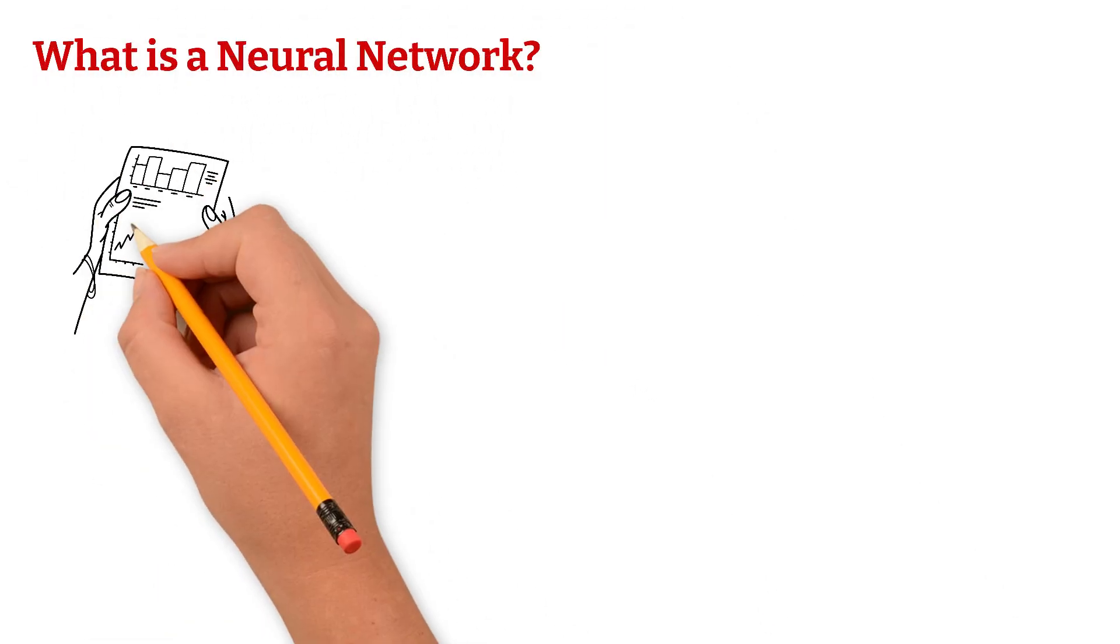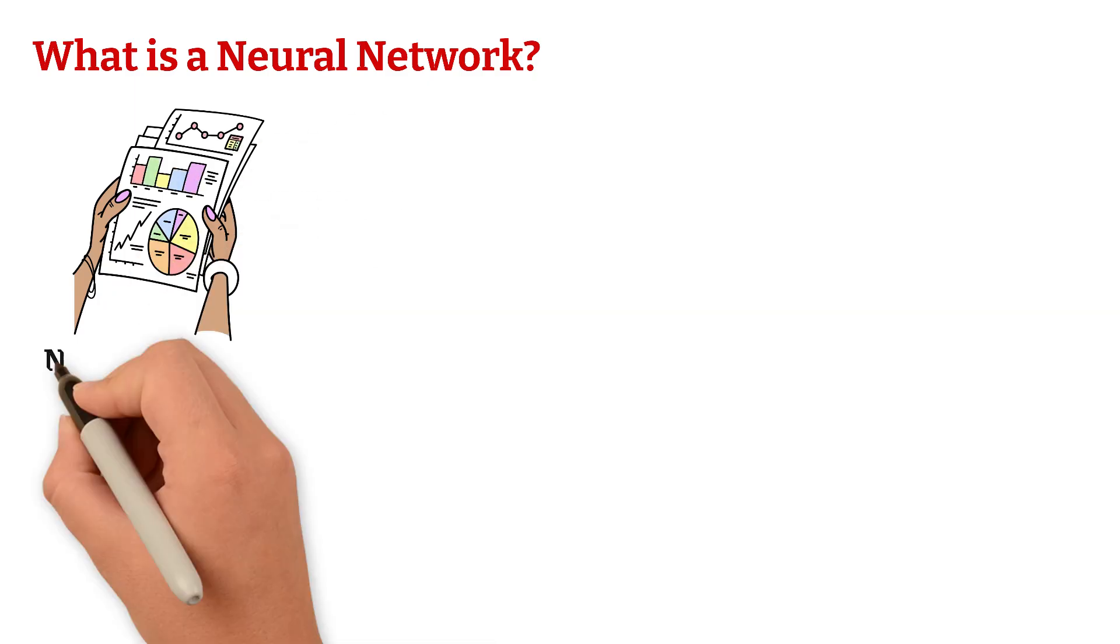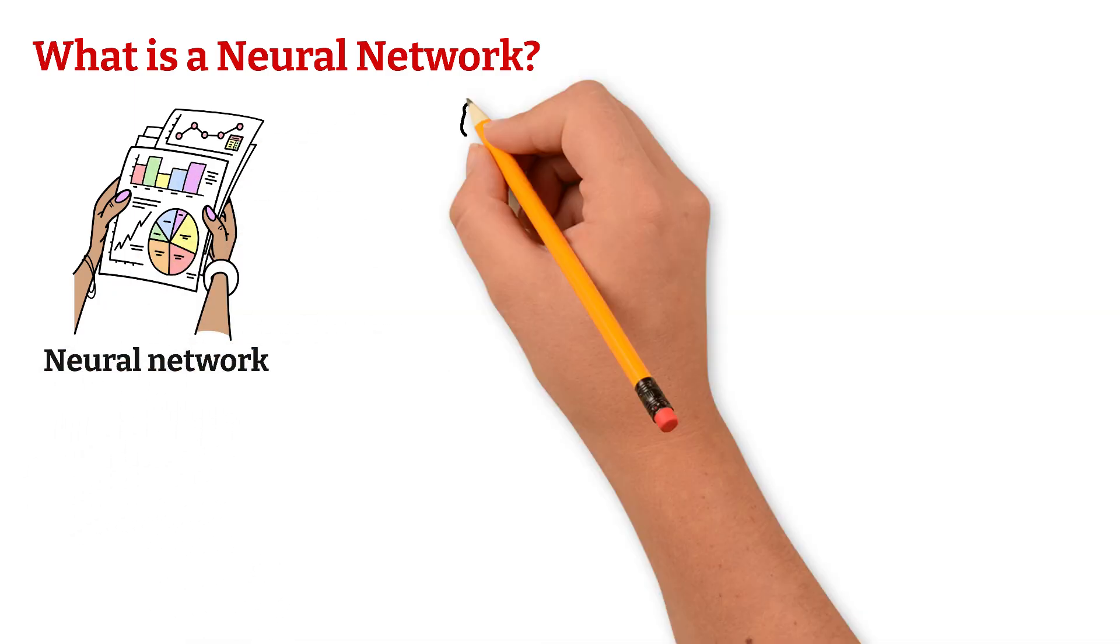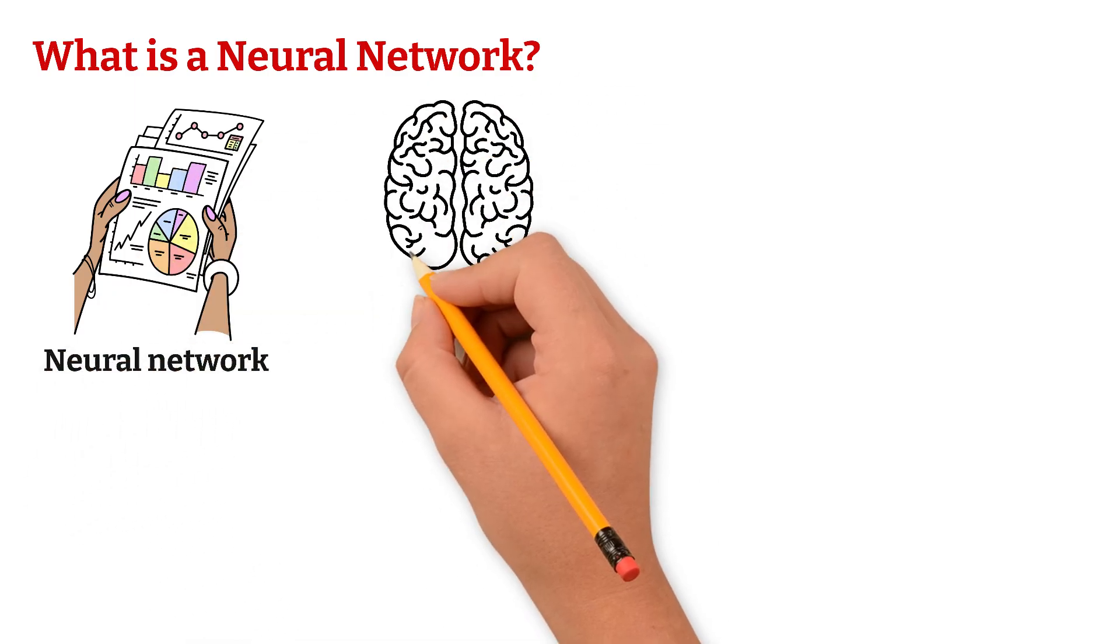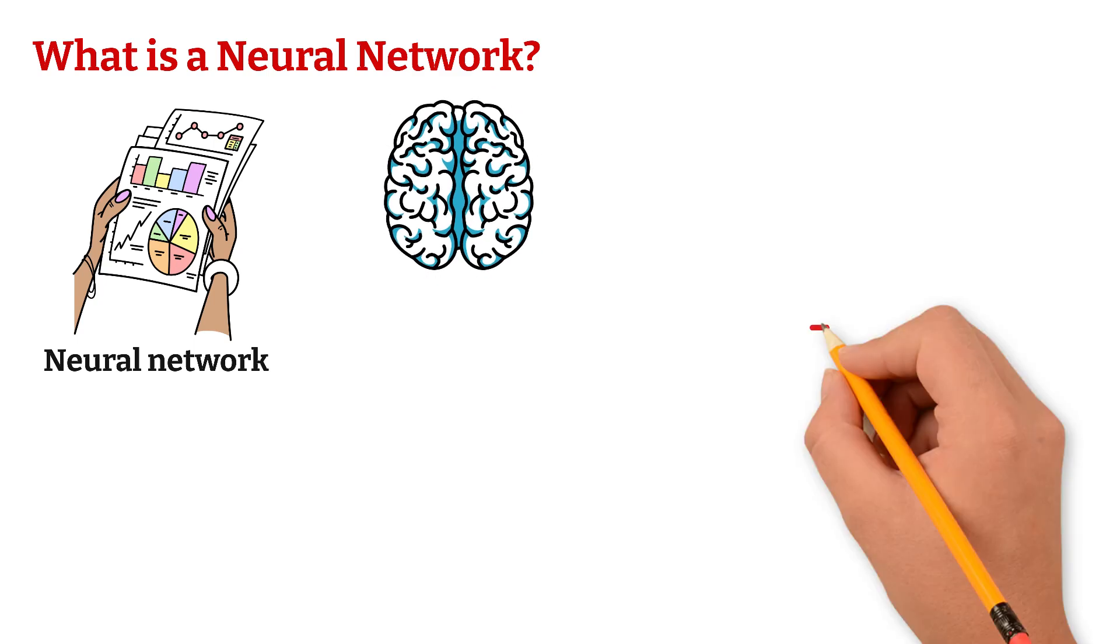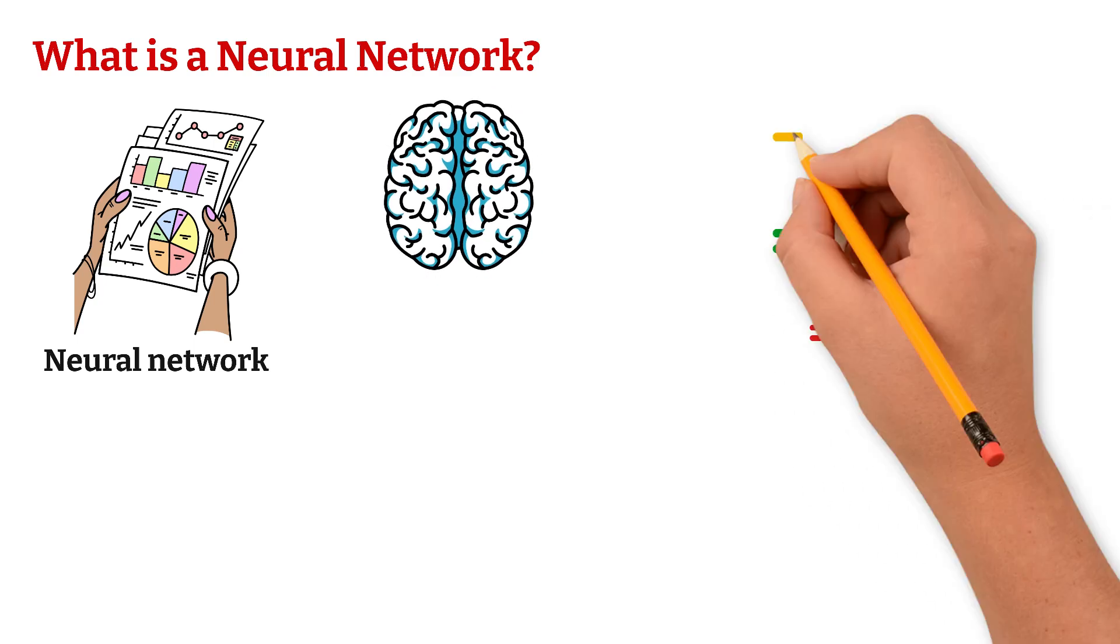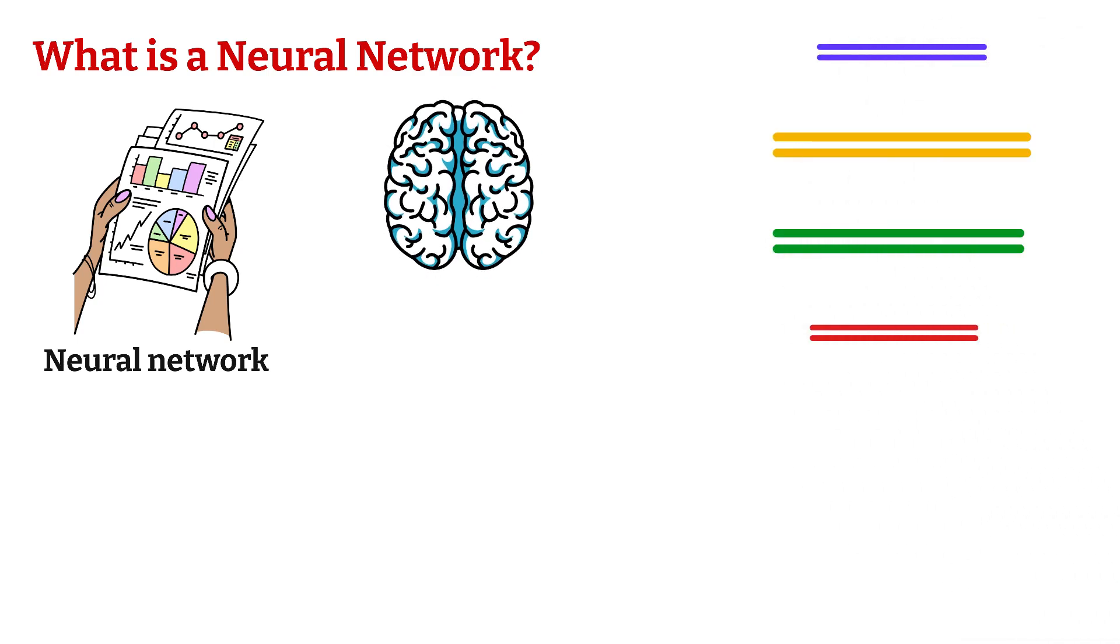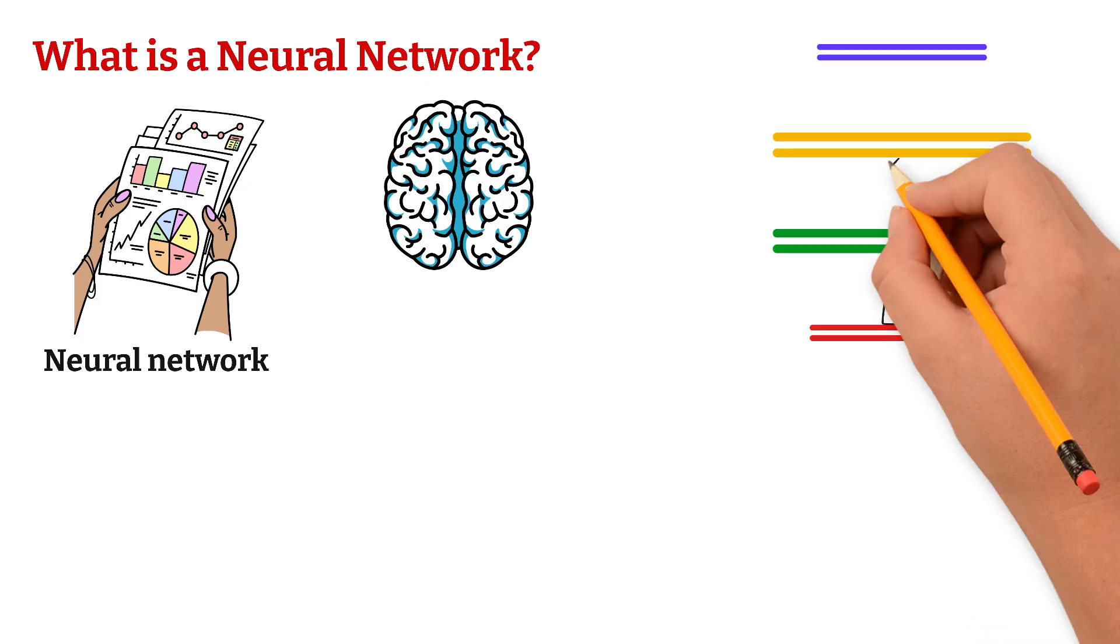To understand all this data, AI uses something called a neural network, inspired by how our brains work. A neural network is made up of layers of connected digital neurons. Each one looks for small clues and passes the info to the next layer.